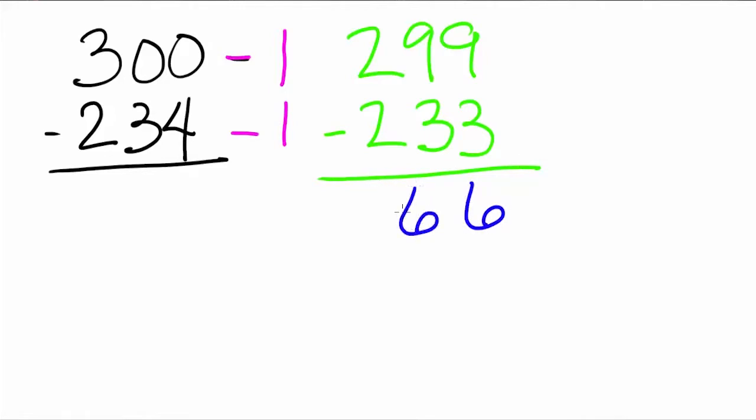Now, subtracting will be easier. 9 minus 3 equals 6. 90 minus 30 equals 60. And finally, 200 minus 200 equals 0. You don't have to record the zero, but some students might, and it doesn't change the answer.